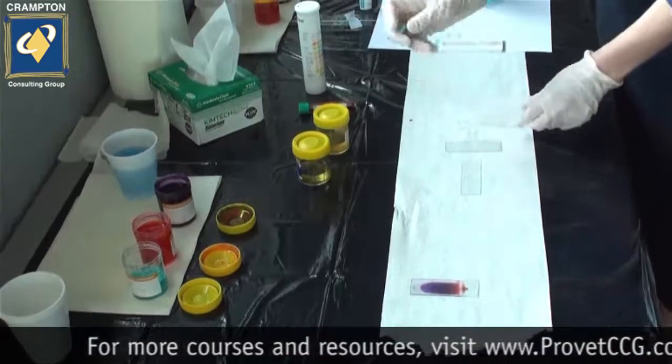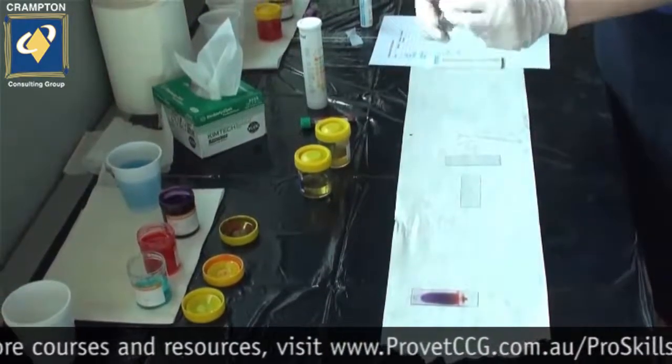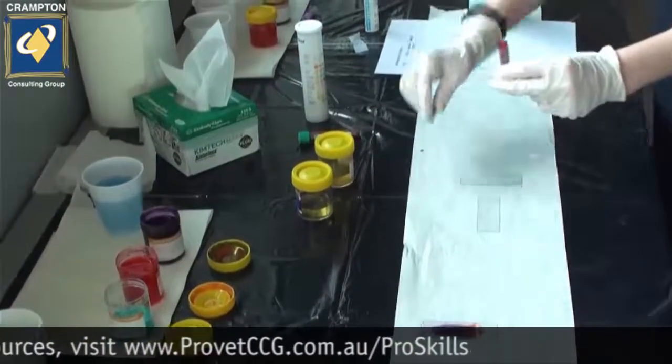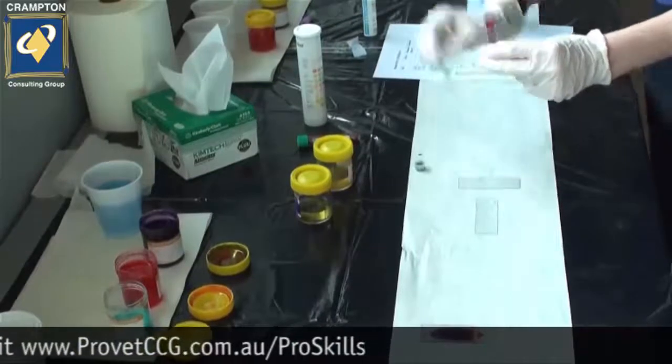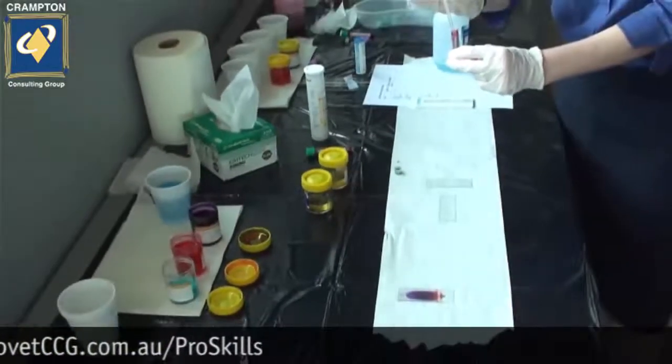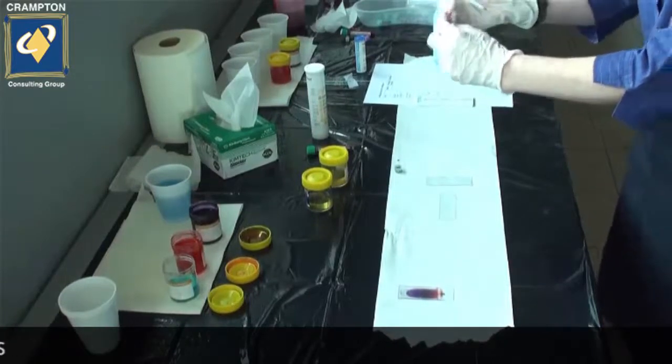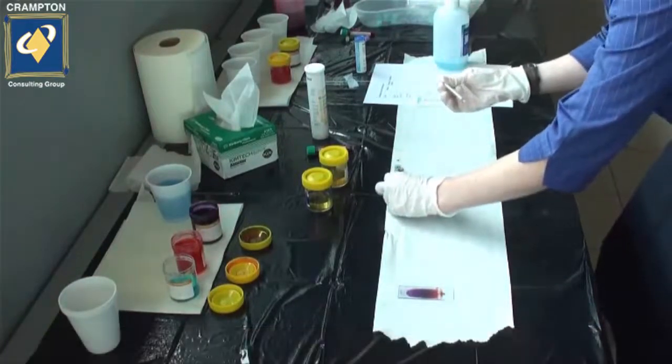Gently agitate your blood sample to adequately mix the red blood cells and serum together. Then remove a very small sample using the pipette and apply a small drop of blood to the end of your slide.